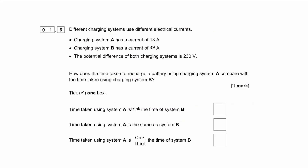Here's a multiple choice question. Different charging systems use different electrical currents. Charging system A has a current of 13 amps; charging system B has a current of 39 amps. The potential difference of both systems is 230 volts. How does the time taken to recharge a battery using system A compare with system B? Options: system A takes triple the time of B; system A is the same as B; or system A takes one third of the time of B.